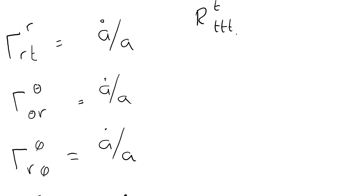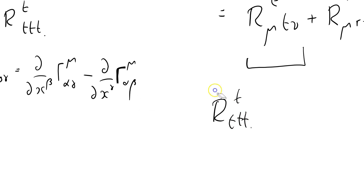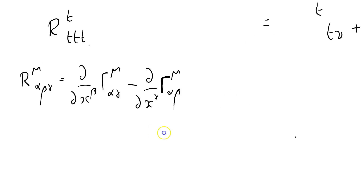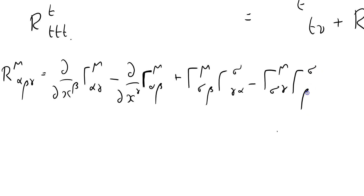Let me just remind myself what the Riemann-Christoffel curvature tensor is: R mu alpha beta gamma equals d/dx-beta of Christoffel(mu, alpha, gamma) minus d/dx-gamma of Christoffel(mu, alpha, beta), plus R mu sigma beta times Christoffel(sigma, gamma, alpha) minus the other term Christoffel(mu, sigma, gamma) times Christoffel(sigma, beta, alpha).